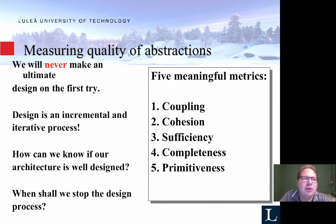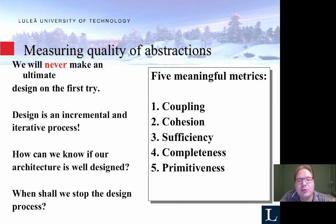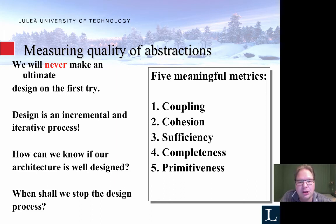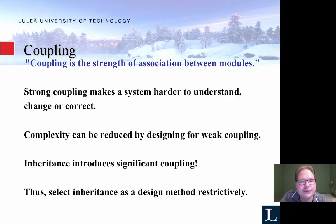We're not perfect, we will not develop the perfect software the first time and it is an incremental process. But we do have some quantitative metrics we can use to evaluate whether we've succeeded or not. So these are coupling, cohesion, sufficiency, completeness and primitiveness, and I'm going to go through each of these.